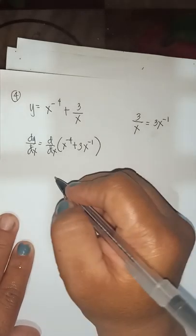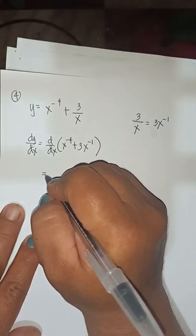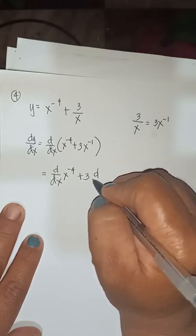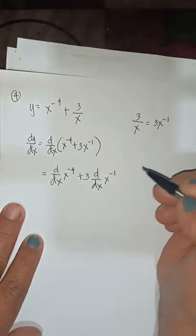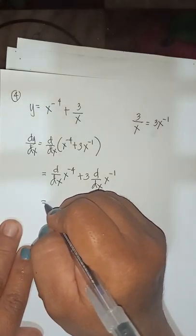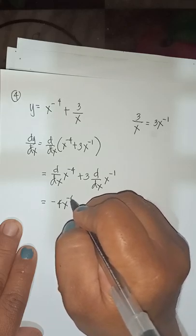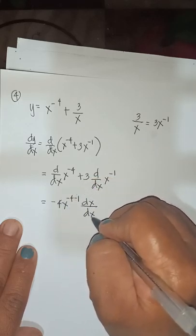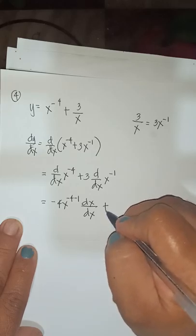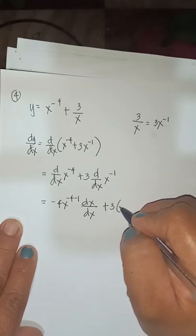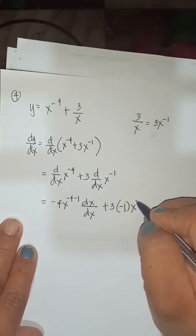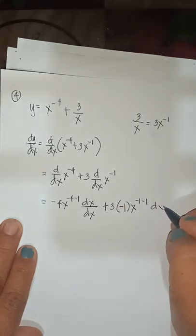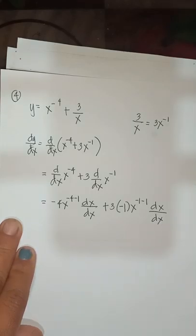So therefore, we will have d/dx of x to the negative 4 plus 3 times d/dx of x to the negative 1. Applying the power rule, we get negative 4x to the negative 4 minus 1, and 3 times negative 1 times x to the negative 1 minus 1.